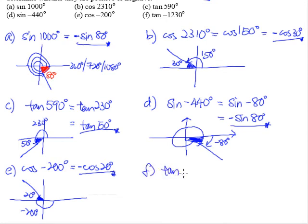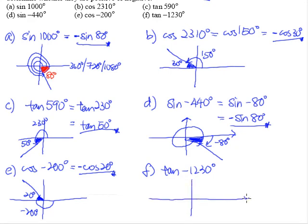Last one — part F: tangent negative 1,230 degrees. This is more than three rounds since 1,080 degrees is three rounds. We take away 1,080 degrees, giving us tangent negative 150 degrees. The next step is to find where negative 150 degrees is.